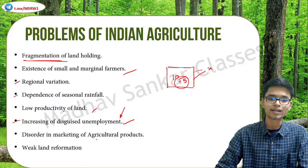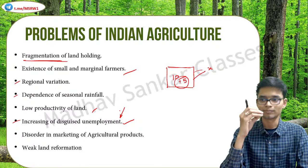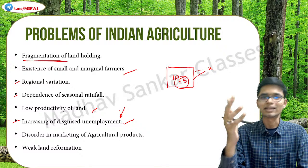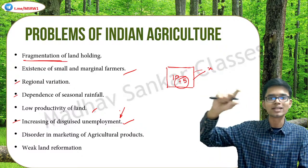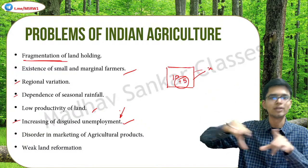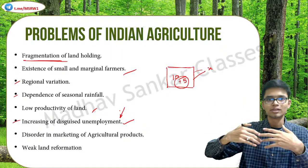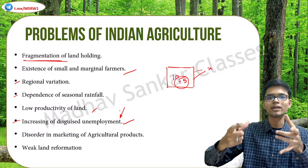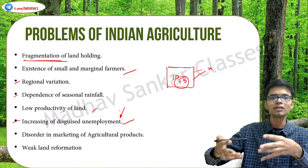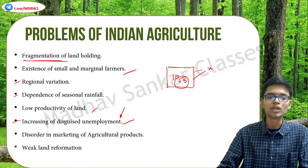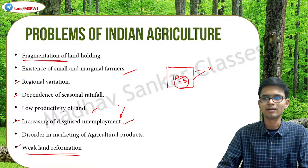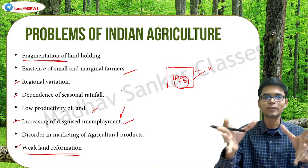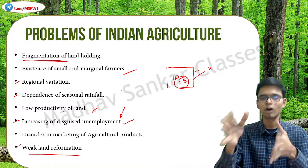Disorder in marketing of agricultural products is another issue. How you market agricultural products — through dry chain, cold chain, etc. — is very important. When exporting, you must meet certain standards and quality requirements; export quality differs from domestic quality. Marketing involves how you process, store, transport, and package the crop. Finally, weak land reform is also a problem — we need proper laws regarding land handling, proper policies, and proper legislation while dealing with this sector.